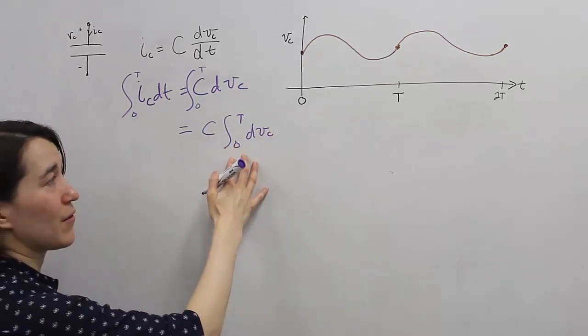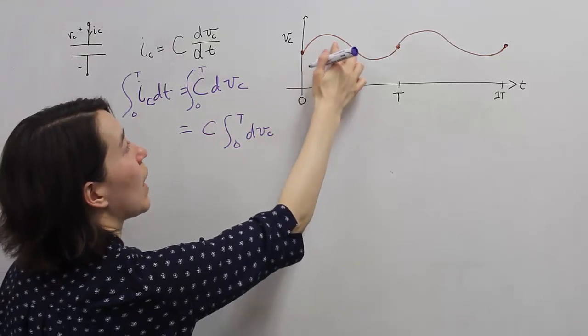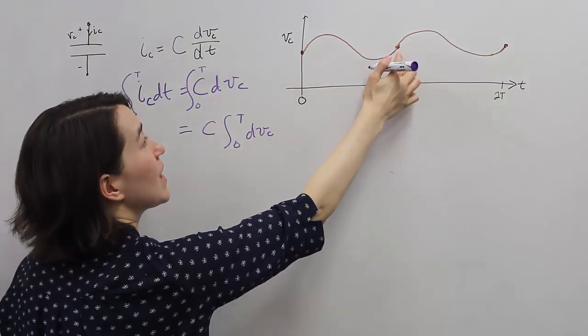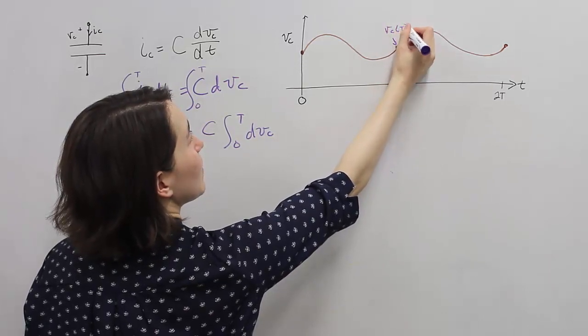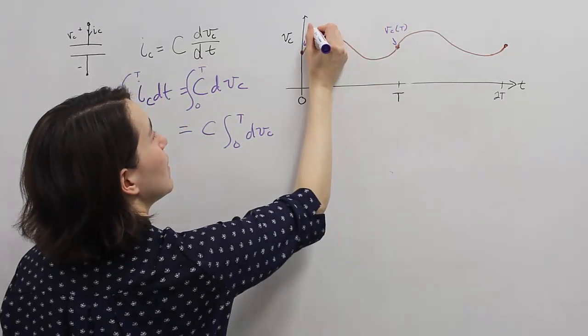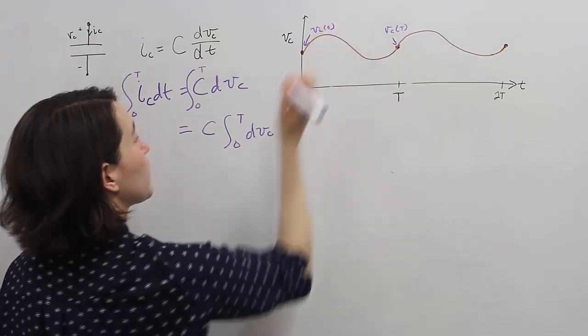This, we can simplify, break down, because we know we're operating over a period, and we know that there's going to be a point here, v_c of T, and we're going to look at this point too, v_c of 0. So, let's just rewrite this.